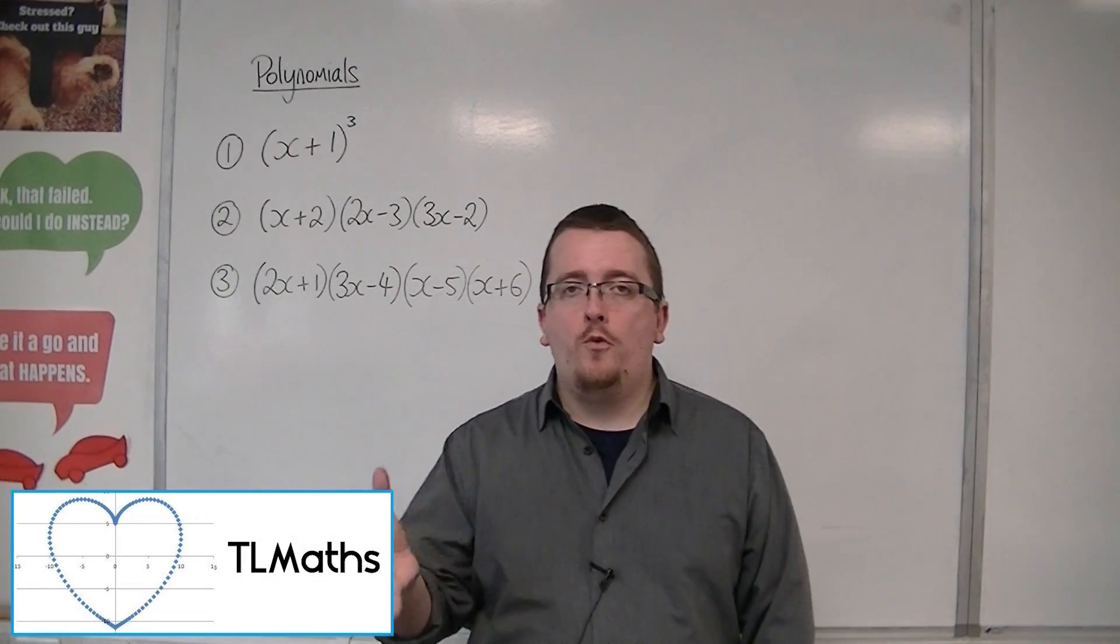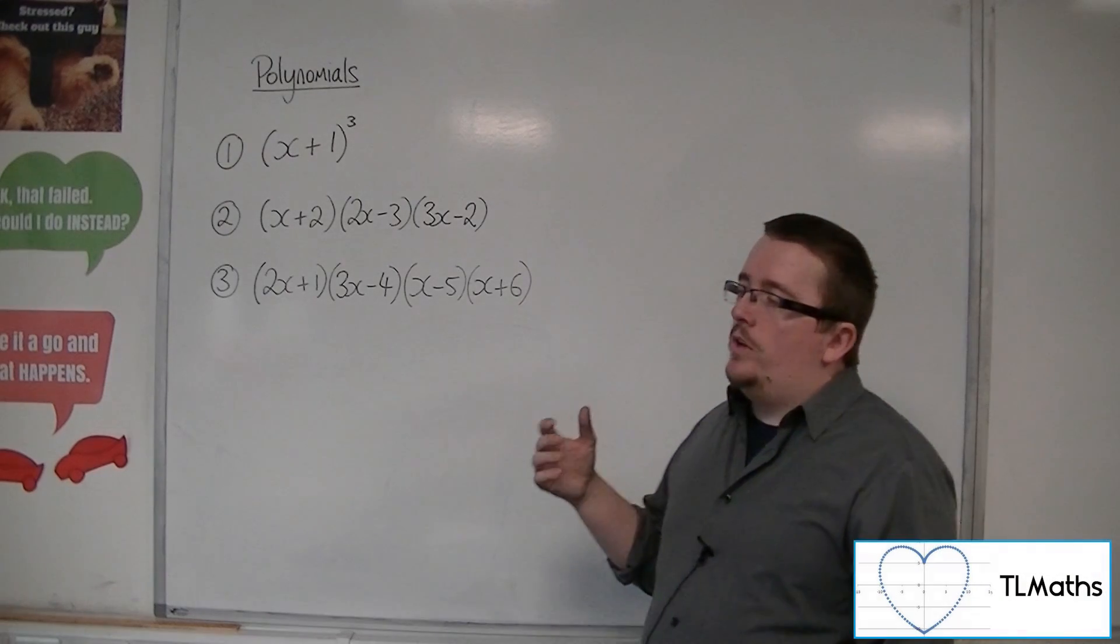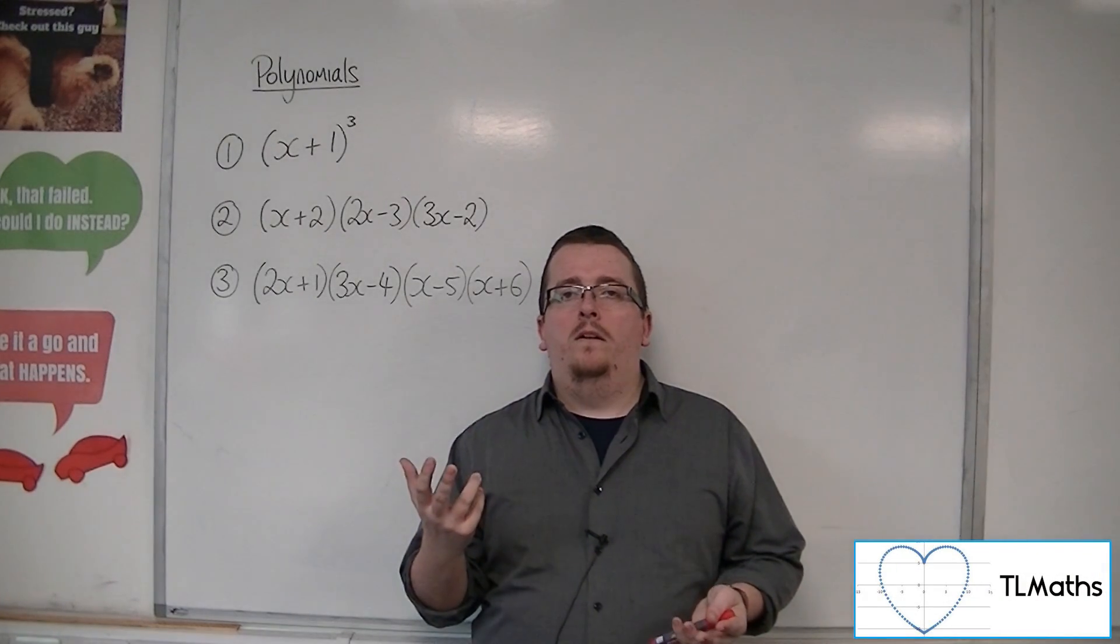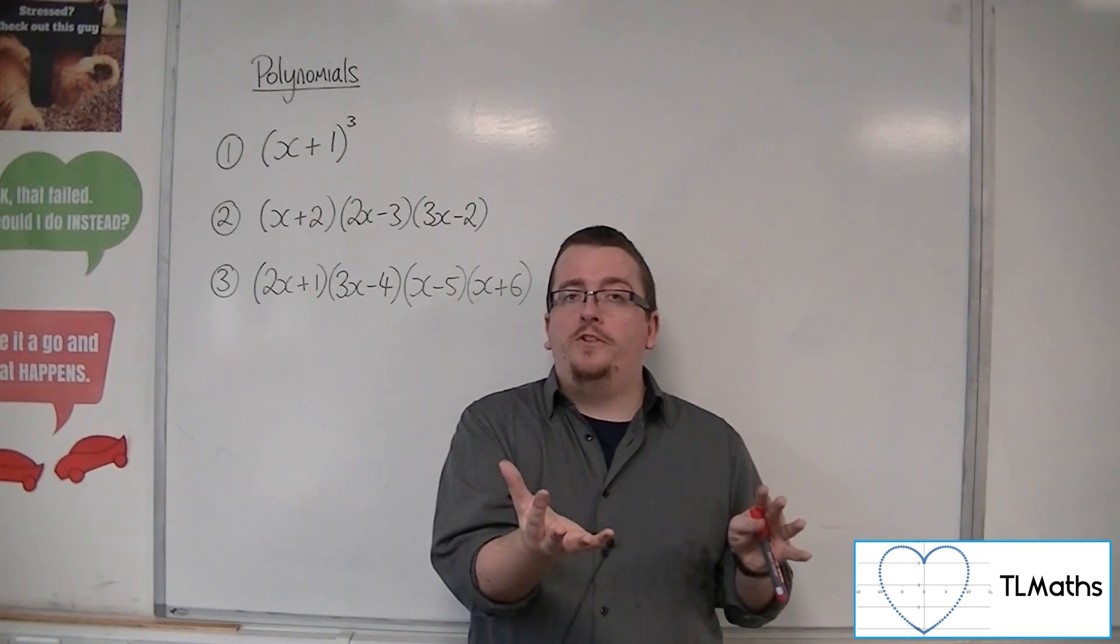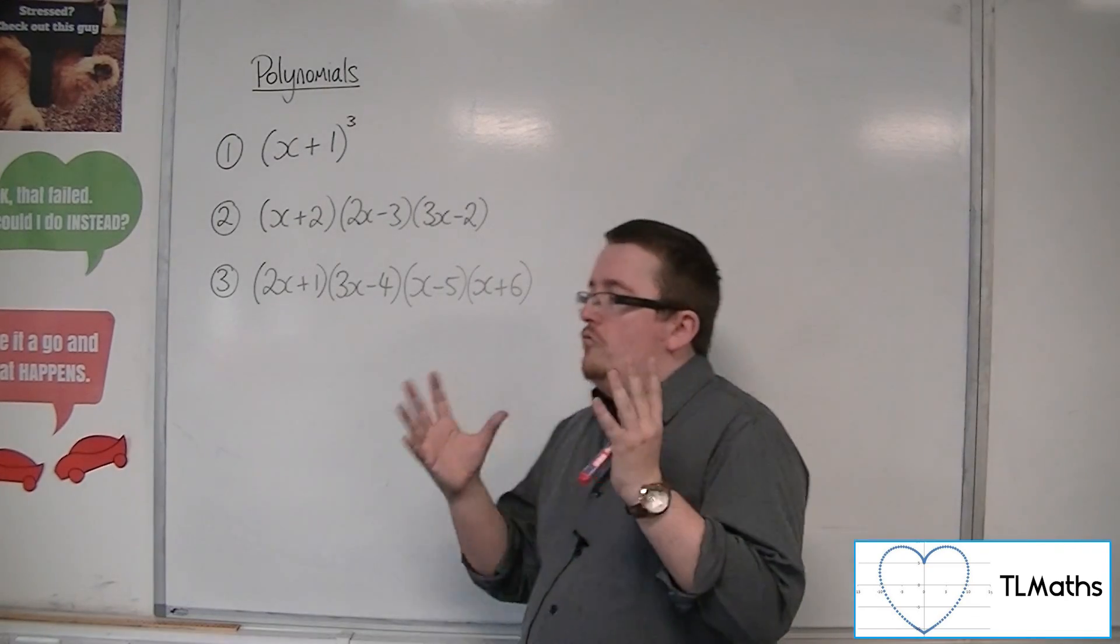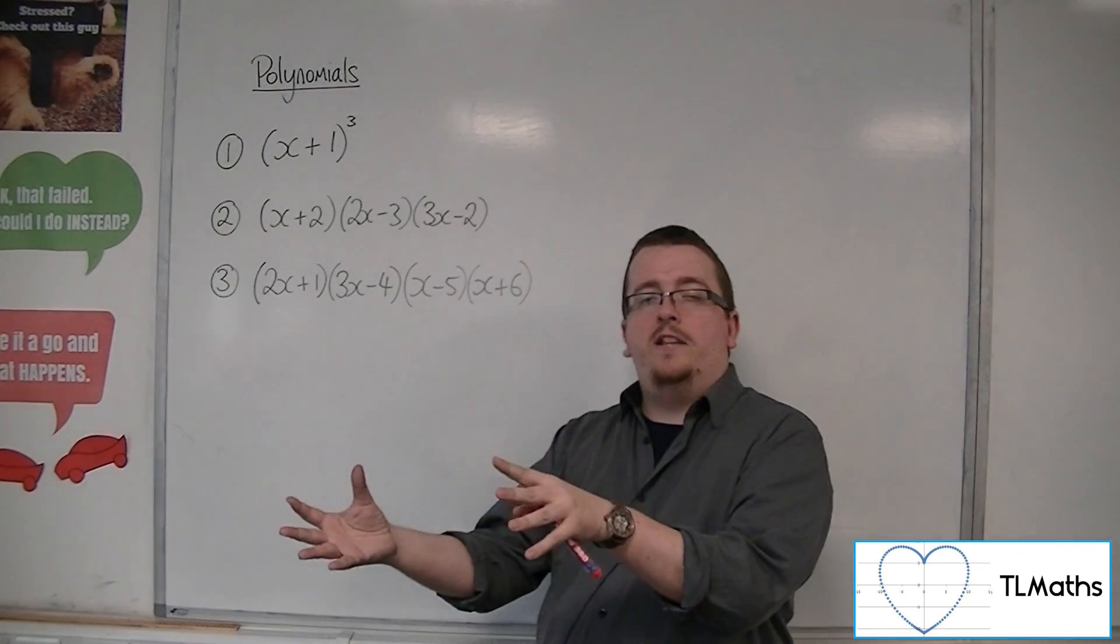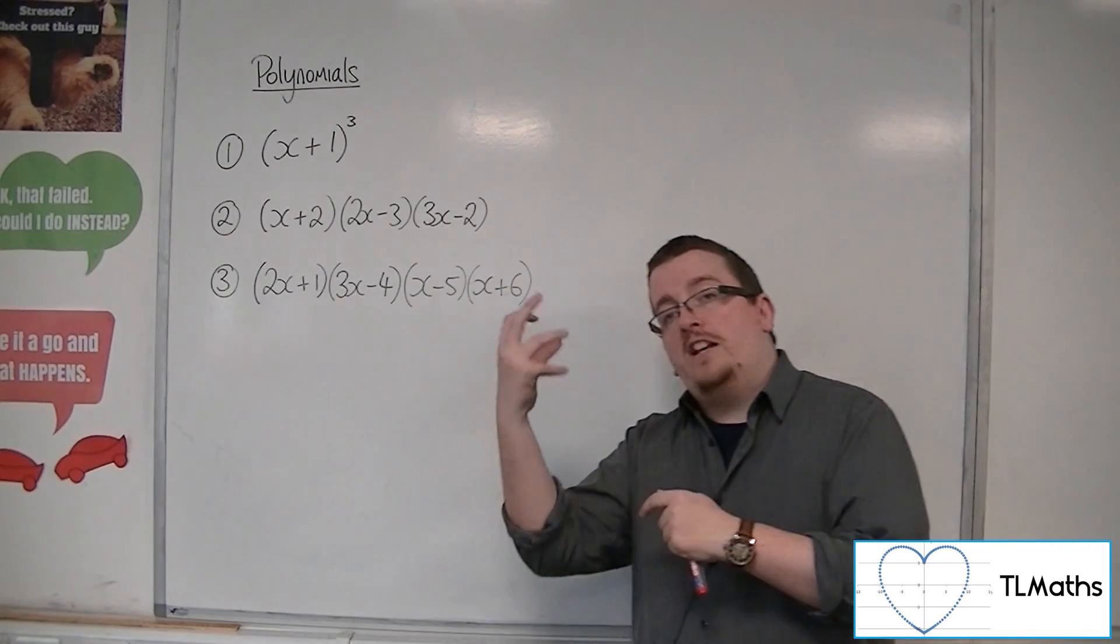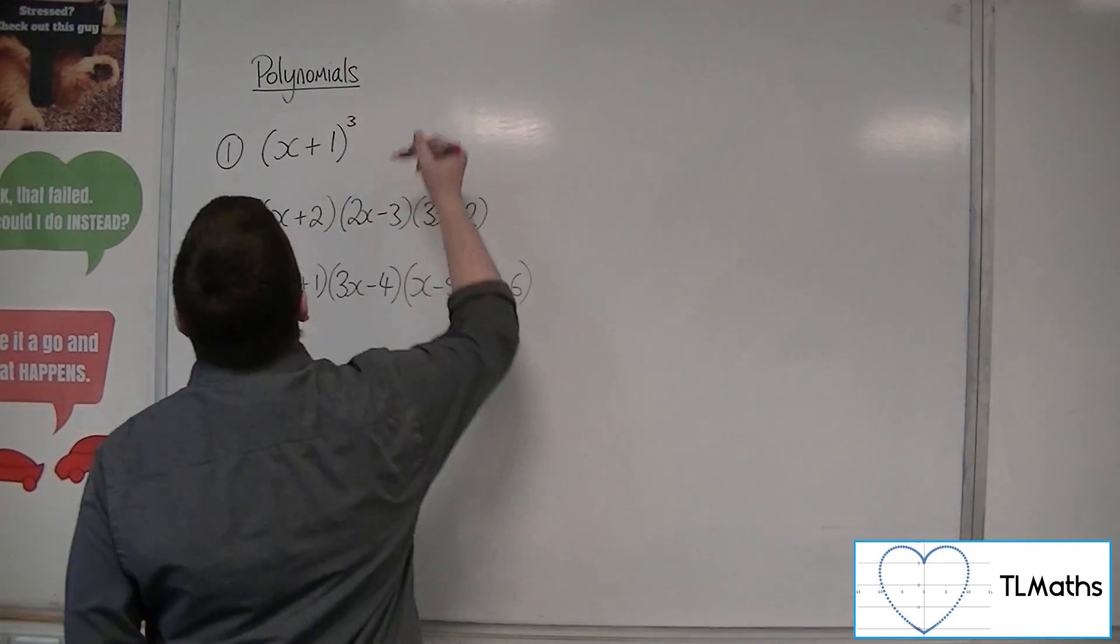If you need to expand three or more brackets, then you can't really draw a three-way kind of grid, a three-dimensional grid, in order to expand them. What you really need to think about doing is just choose two of the brackets to expand first, and then deal with expanding the two brackets that you're left with.